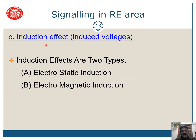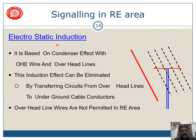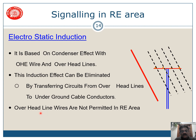The third factor is the induction effect, which is basically due to electrostatic induction and electromagnetic induction — both types acting on signaling cables. The first type, electrostatic induction, is generally like a condenser effect between the OHE wire and overhead lines. This can be completely eliminated by removing overhead lines and using underground cables. Overhead lines are not at all permitted in RE areas.